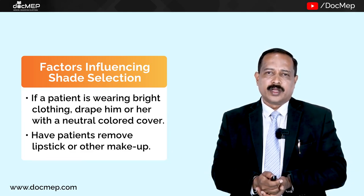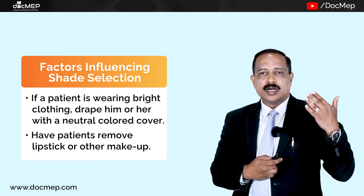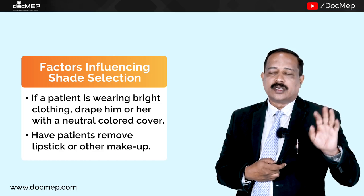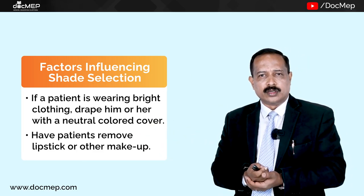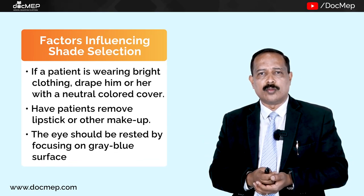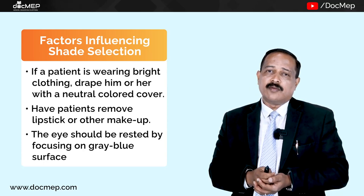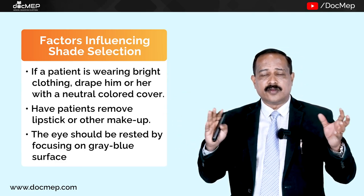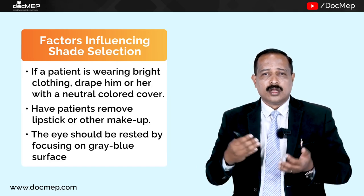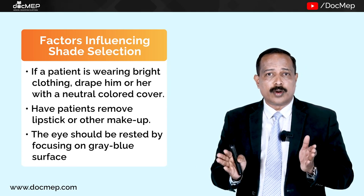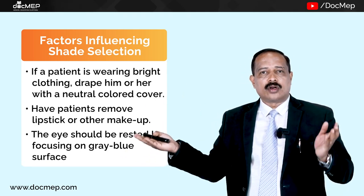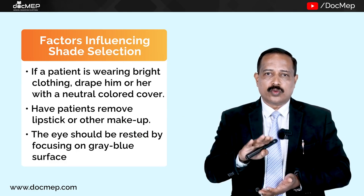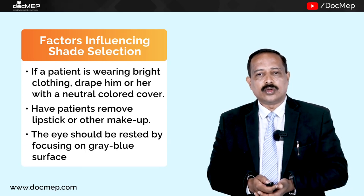When you have a problem understanding the intensity — that is the chroma — whether it is A1, A2, or A3, try to look at a blue picture and you will understand the amount of chroma present in that particular tooth. If you are having a problem with the hue — whether it is an A shade, B shade, or C shade, or if you cannot distinguish whether it is yellow or brown — try looking at a gray surface. Your rods and cones will get neutralized and you will be able to visualize clearly whether it is an A, B, or C shade.